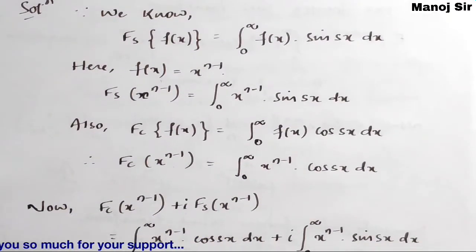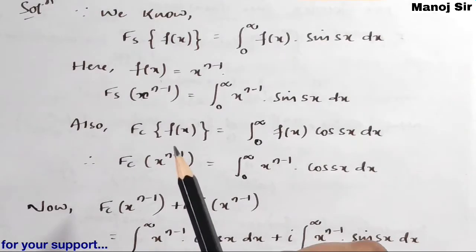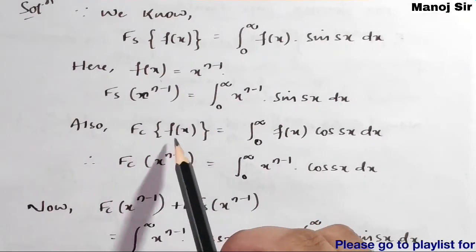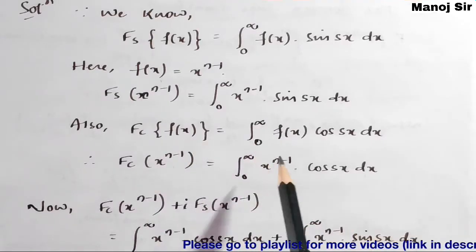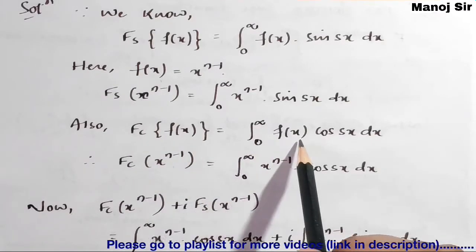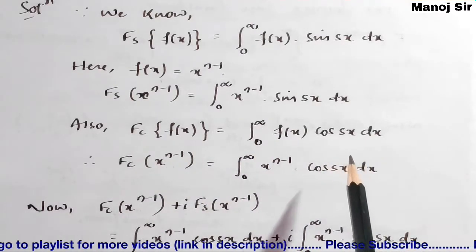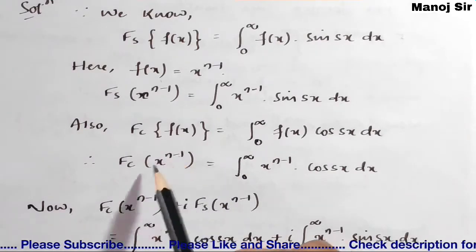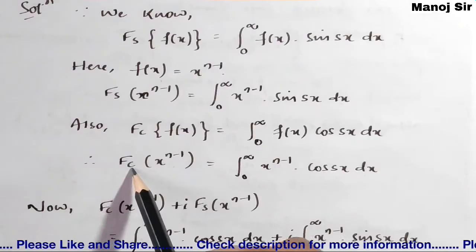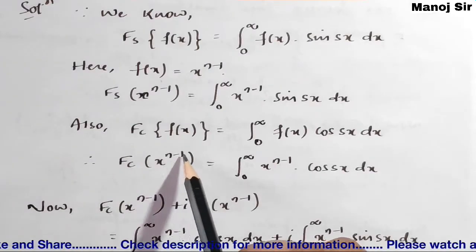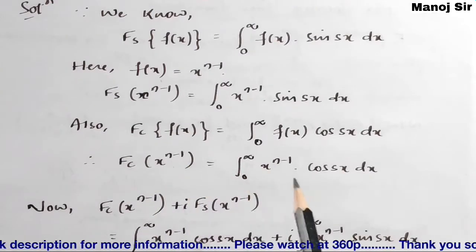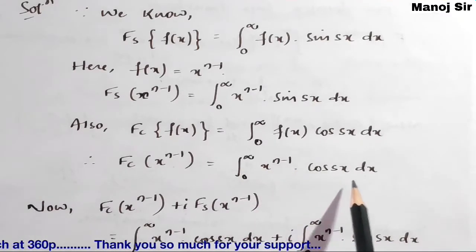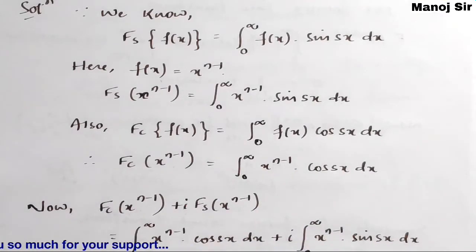In the same way, the Fourier cosine transform of f(x) equals the integration from 0 to infinity of f(x) times cos(sx) dx, where f(x) is given as x to the power n minus 1. So the Fourier cosine transform of x^(n-1) is the integration from 0 to infinity of x^(n-1) times cos(sx) dx.